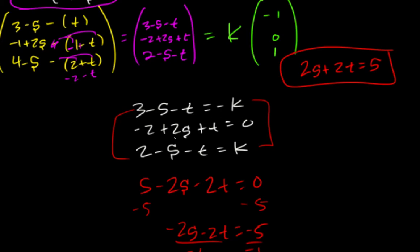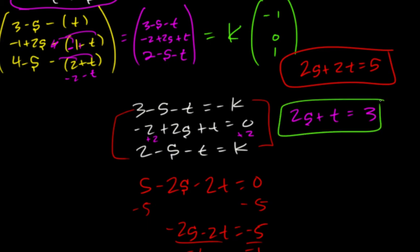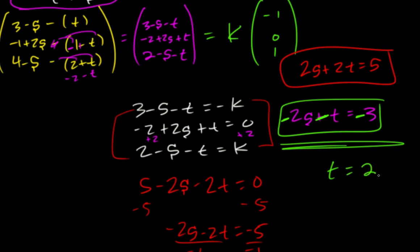Using elimination, I'll change the signs and add the equations. Those terms cancel, leaving just t. After correcting a sign — that should be a two — we get t equals 3.